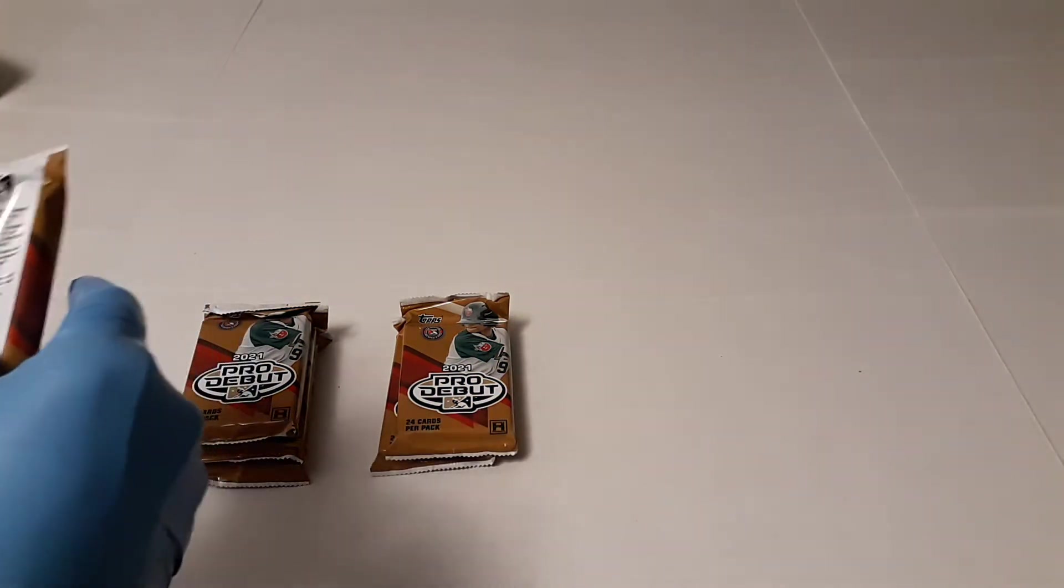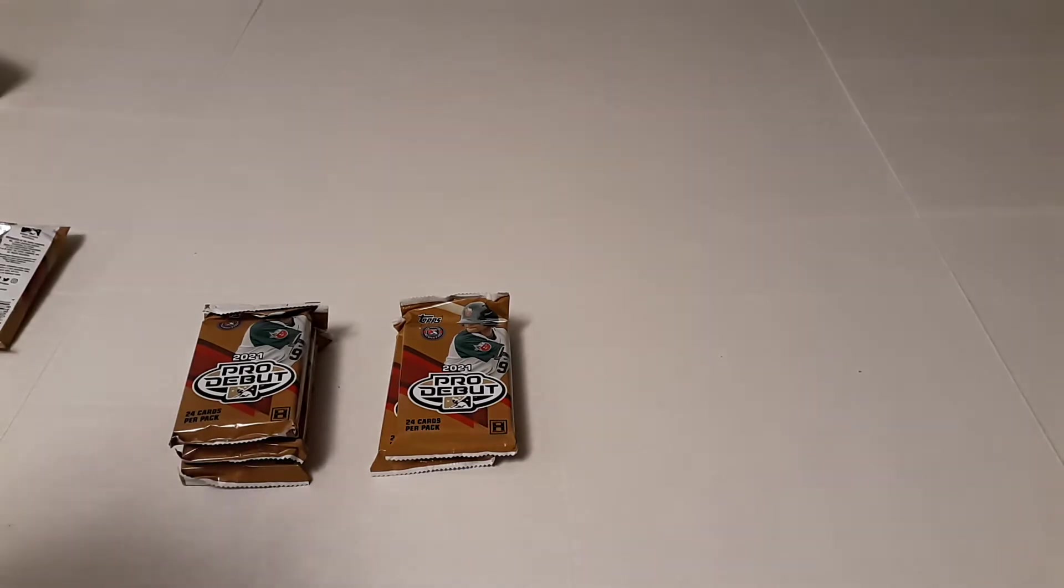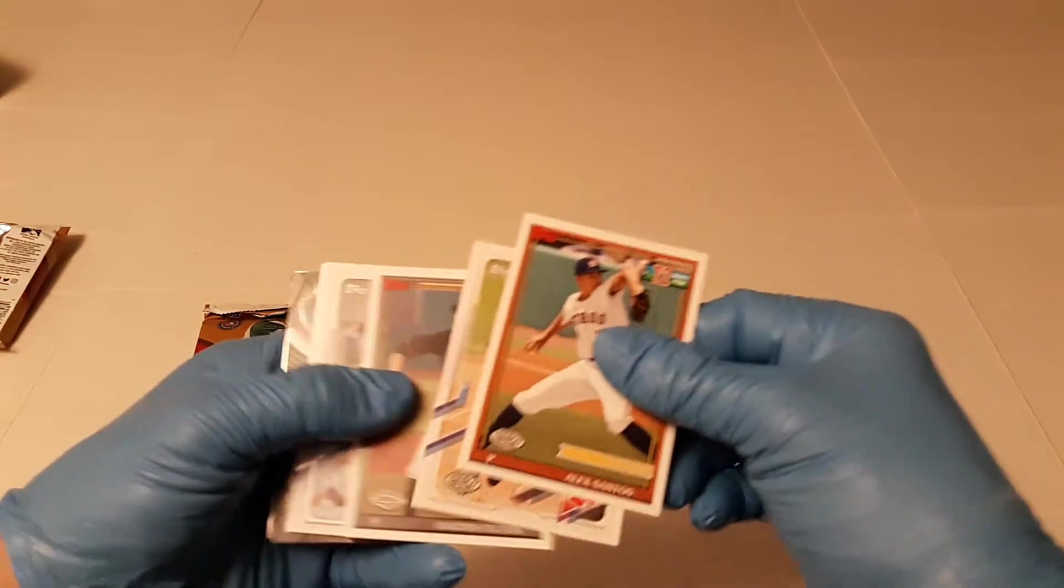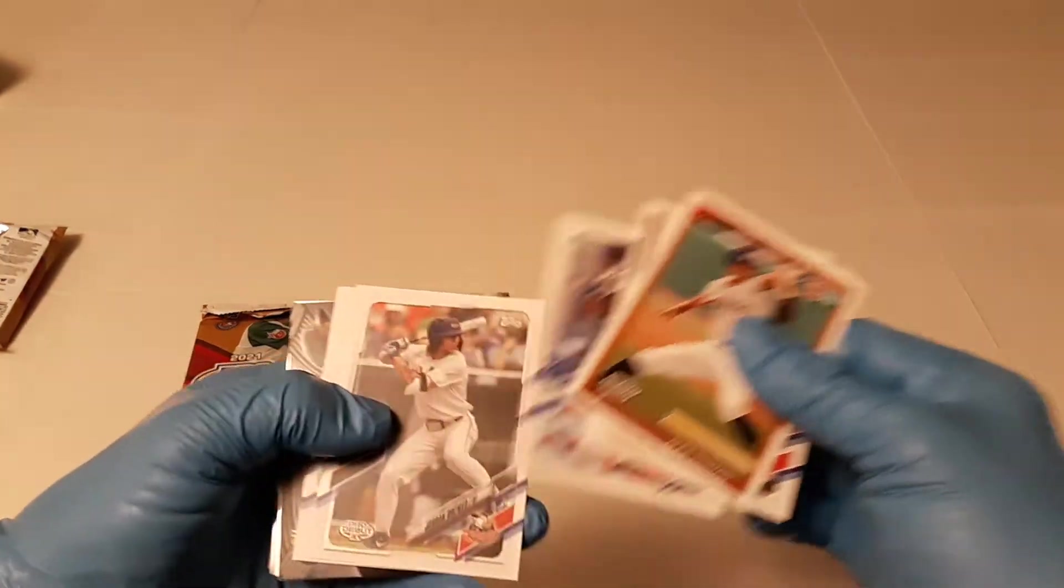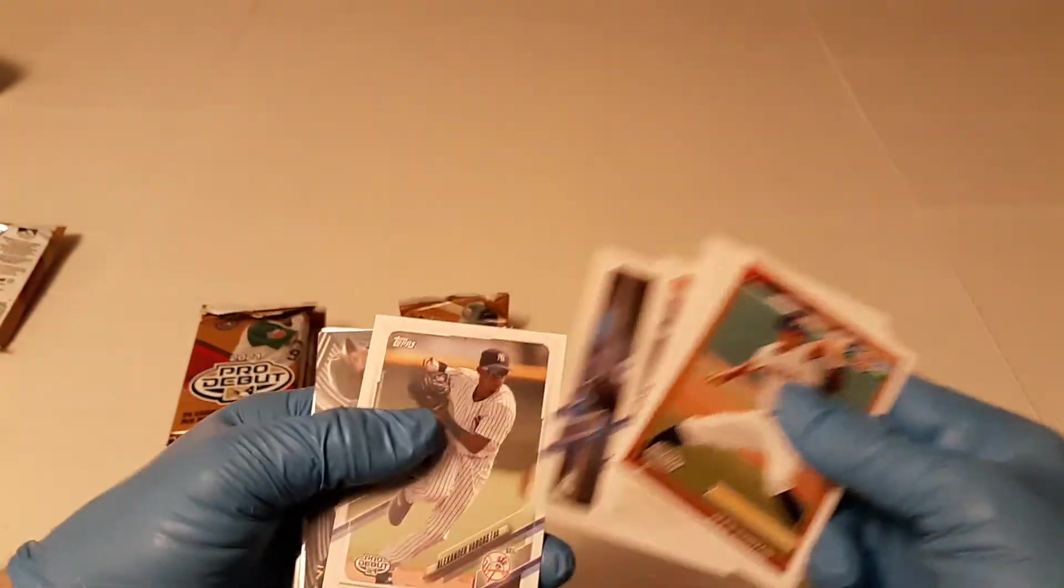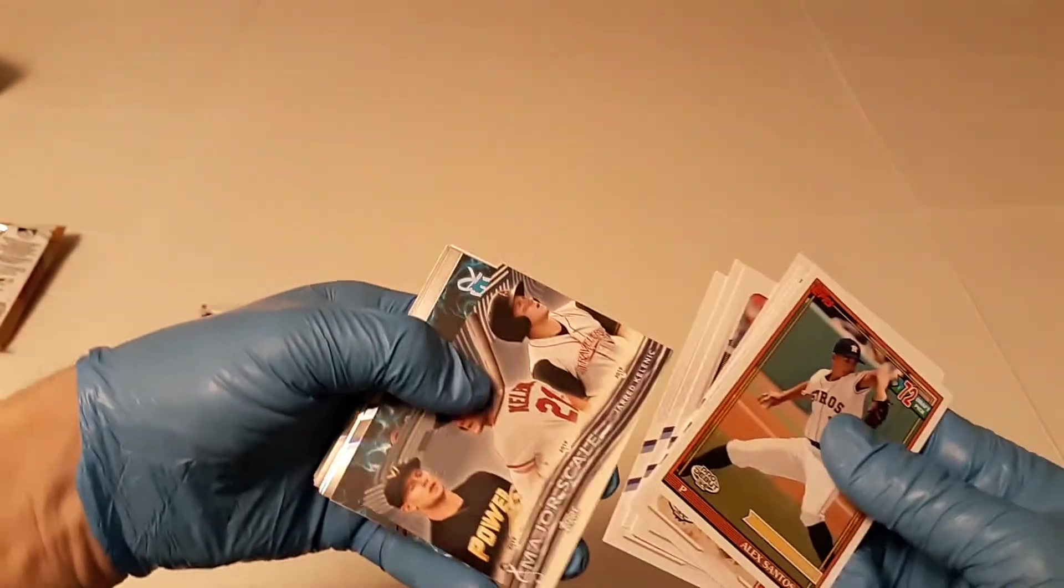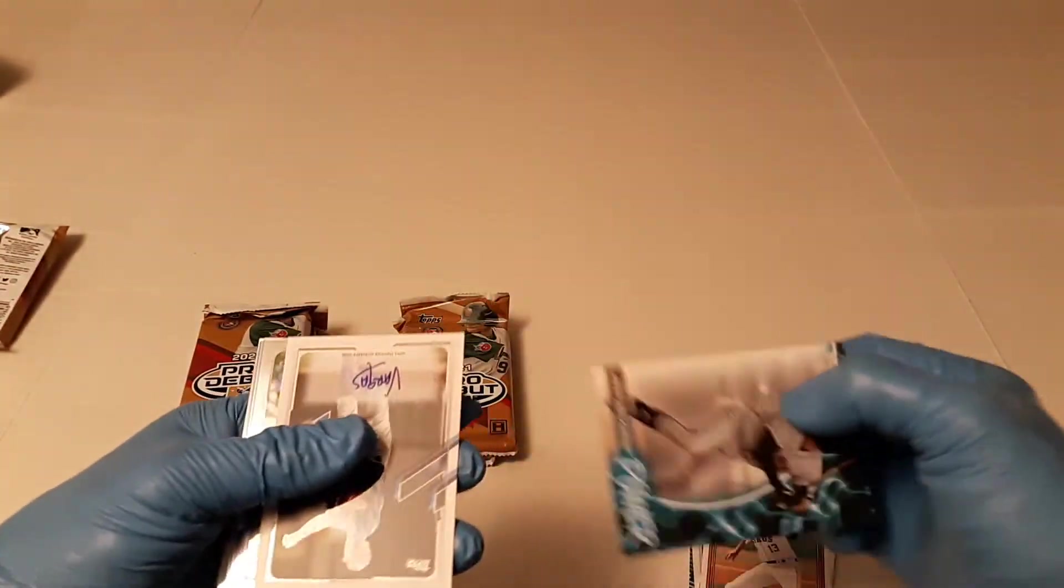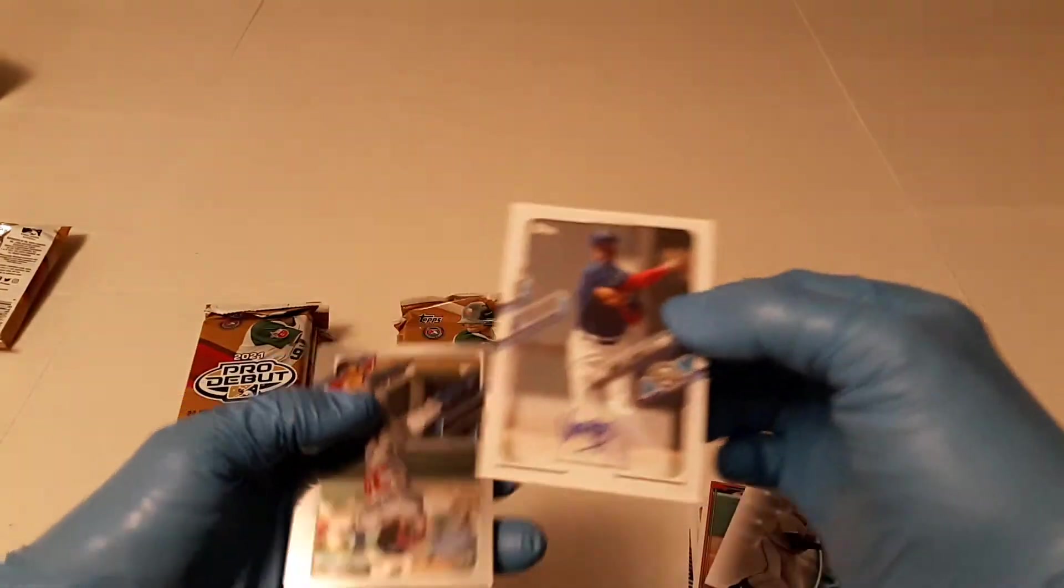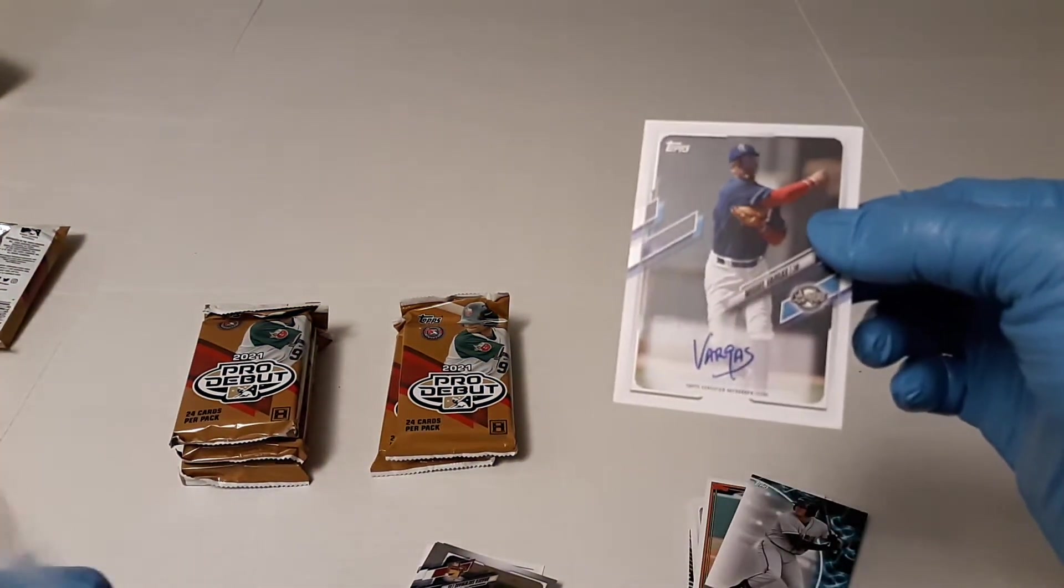And I think I already see an orange right off the bat. It's crazy. Nope, that's just the... you got Alex Santos, Nick York, Dexton Fulton, Drew Waters, Jordan Brewer, Xavier Edwards, I don't know why I was saying that, Alexander Vargas, Jared Kelnick, Major Scale, Adley Rushman. And here's our first one. Decent autograph, Miguel Vargas. So there's our first auto. It's Miguel Vargas, and he just signs it, Vargas.